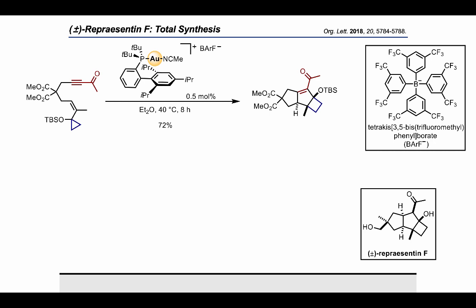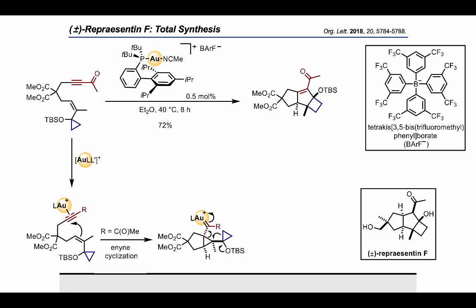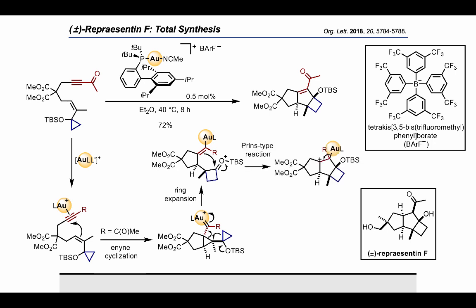For a better understanding of the gold-catalyzed cascade reaction, let's see the proposed mechanism. This transformation starts with the coordination of gold to the alkyne in the cyclopropyl-tethered 1,6-enyne, which triggers the enyne cyclization to give a cyclopropyl-gold-carbene intermediate, which is a common intermediate in gold catalysis. Then a ring expansion takes place to afford the cyclobutanone, which undergoes a Prins-type reaction and final protodemetalation to yield the tricyclic skeleton of the molecule.